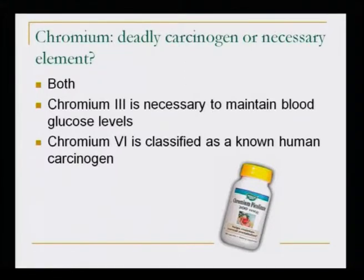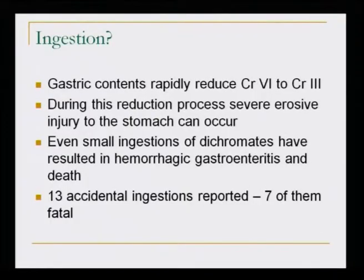Chromium — deadly carcinogen or necessary element? It is both. Chromium-3 is necessary to maintain blood glucose levels; however, chromium-6 is classified as a known carcinogen. One species is our friend and the other our enemy. Upon ingestion, gastric contents rapidly reduce chromium-6 to chromium-3. During this reduction process, severe erosion injury to the stomach can occur. Even small ingestions of dichromates have resulted in hemorrhage, gastroenteritis and even death.